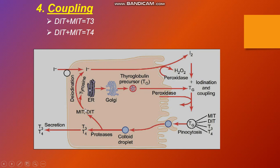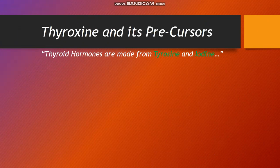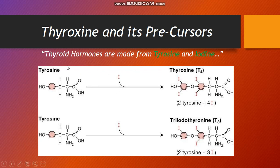The iodination process: thyroxine and its precursors — thyroid hormones are made from tyrosine and iodides, which are the precursors. Tyrosine plus iodine forms thyroxine (T4); tyrosine plus iodine also forms triiodothyronine (T3). Two tyrosine molecules give rise to thyroxine and triiodothyronine.